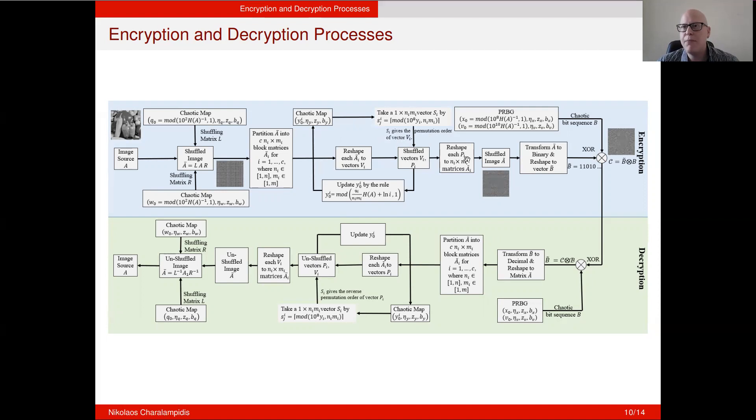Once we finish with that, we reshape each Pi to Ni times Mi matrices A tilde i. And from that, we put each matrix one next to the other, and we obtain the shuffle image A tilde, as you can see it here. In the third and last step, we transform A tilde to binary and we reshape it to vector B tilde. And we take this B tilde binary vector and we combine it with the chaotic bit sequence B, which we obtain from the PRPG. And we combine these two through an XOR process to obtain, finally, the encrypted image C. Then this image, we can send it to the receiver, along with the encryption keys, so he can decrypt it and obtain the original PEPPER image by doing the inverse process.